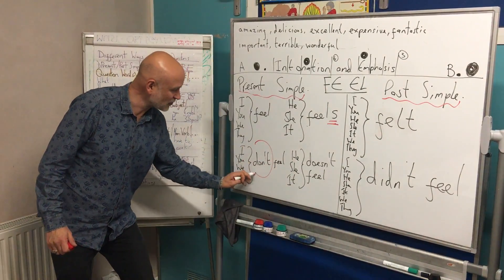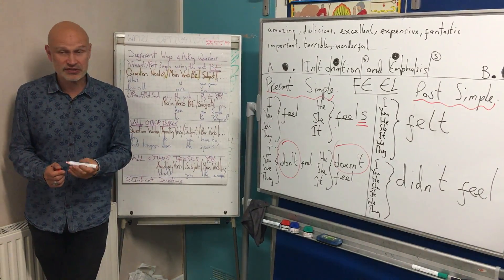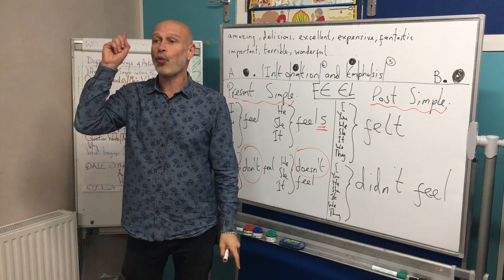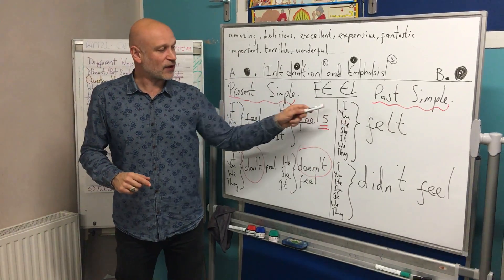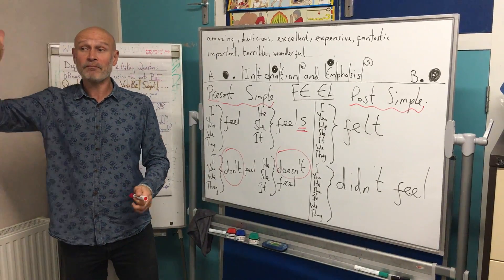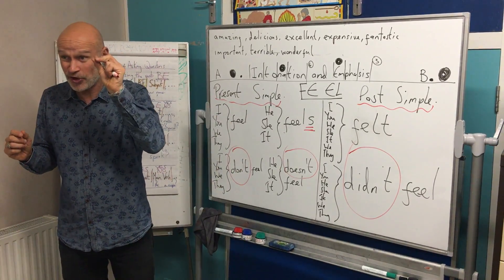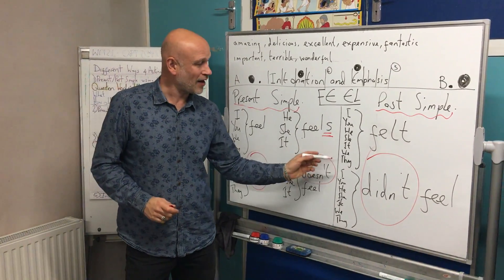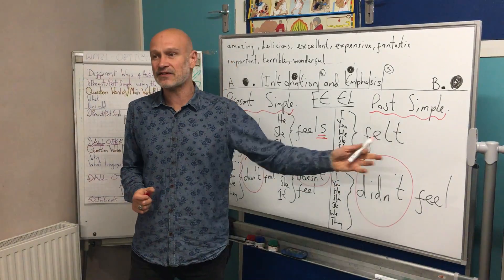In the past, it's easier in a way because you just have one verb for all persons: I felt, you felt, he felt, she felt, it felt, we felt, they felt. For the negative in the past, we use the auxiliary verb 'didn't,' and because we're using that auxiliary, the main verb is always the infinitive: I didn't feel, you didn't feel, he didn't feel, she didn't feel, it didn't feel, we didn't feel, they didn't feel.